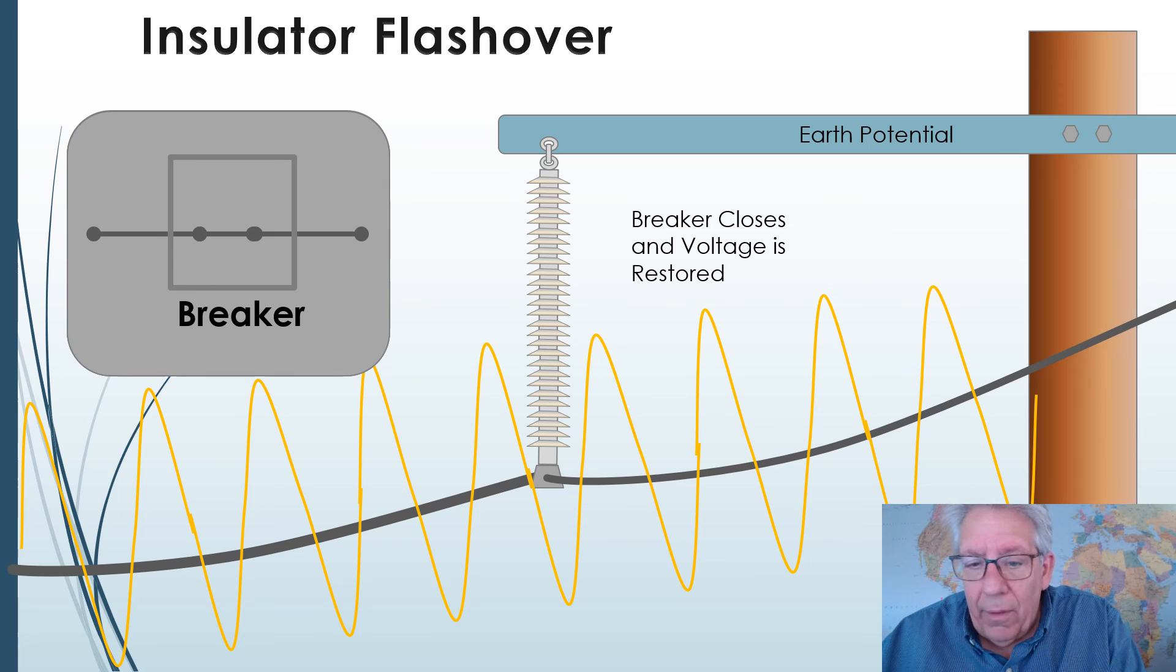So there you go. That's the sequence of events. It goes from beginning with a lightning stroke, to a lightning flashover, to a ball of ionized gas, to a power arc, and then it's recovered by a breaker. There you have it. Thank you.